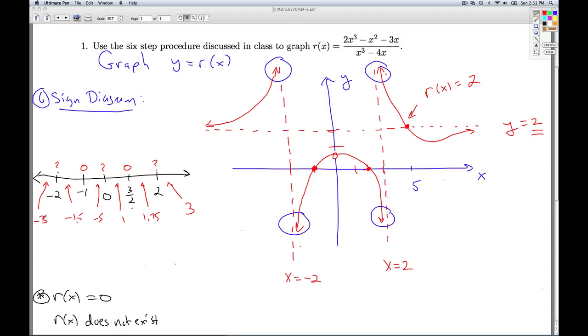So I take negative three, plug it into the function, work it out, I'd find a positive number there. I plug in negative one point five, I would find a negative number there. I plug in negative point five, I would get a positive number there. I plug in one, I would get a positive out for that. I plug in one point seven five, I'd get a negative number for that. I plug in three, and I would get a positive number for that.